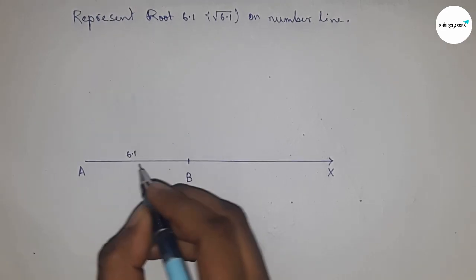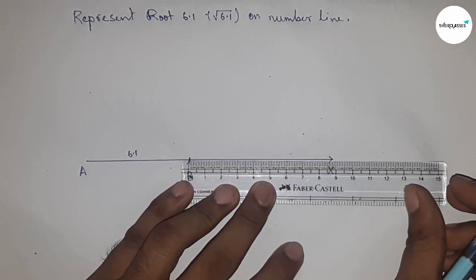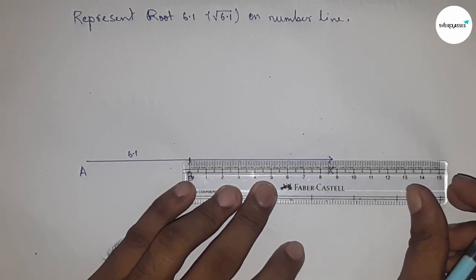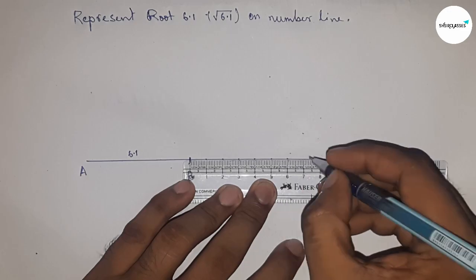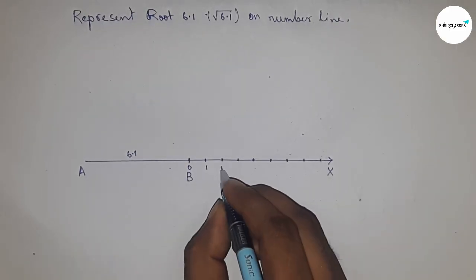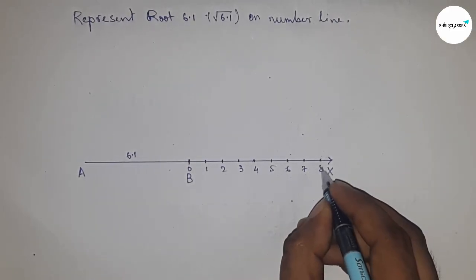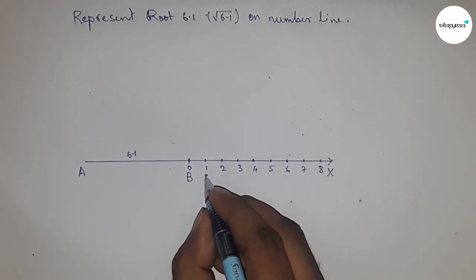So AB equals 6.1 centimeters. Next, mark the numbers on the line from B to X by using a scale. So this is 0, 1, 2, 3, 4, 5, 6, 7, 8, and so on, and this is point C.